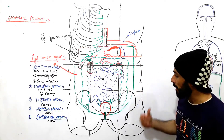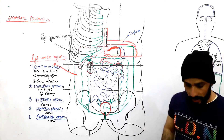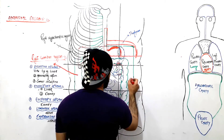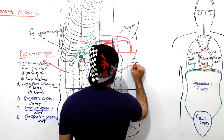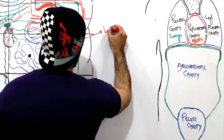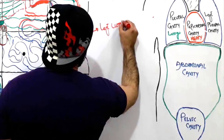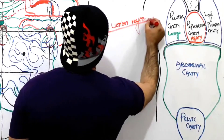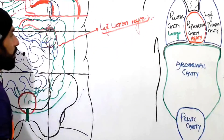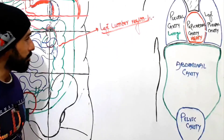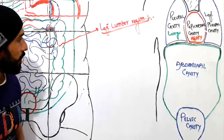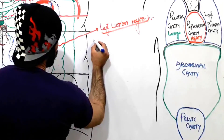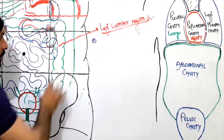We have covered the superior regions, now we are covering the middle regions, and then we will cover the lower regions of the abdomen. So let's go to the left lumbar region. Friends, if my lectures are helpful to you, please write in the comment section so I can further develop myself according to your choices.